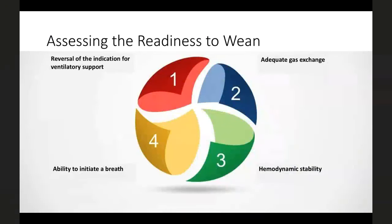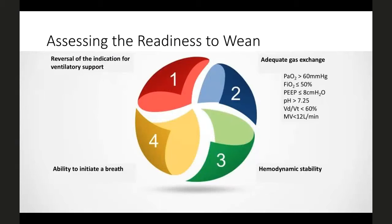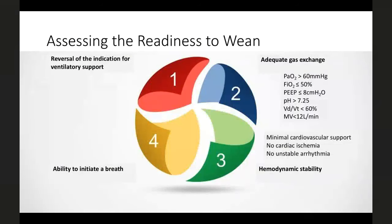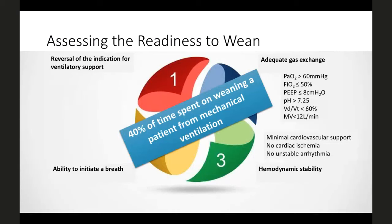How do you assess the readiness to wean? First, look for reversal of the indication for ventilatory support — there should be good enough reasons to believe so. Gas exchange should be adequate: good PaO2, reduction in FiO2 or oxygen requirement, reduction in PEEP requirement, pH coming close to physiological, VD/VT less than 60%, patient not hyperventilating. The patient should also be hemodynamically stable — minimal cardiovascular support, no evidence of cardiac ischemia, no unstable arrhythmias. It is said that more than 40% of the time on mechanical ventilation is spent on weaning the patient.